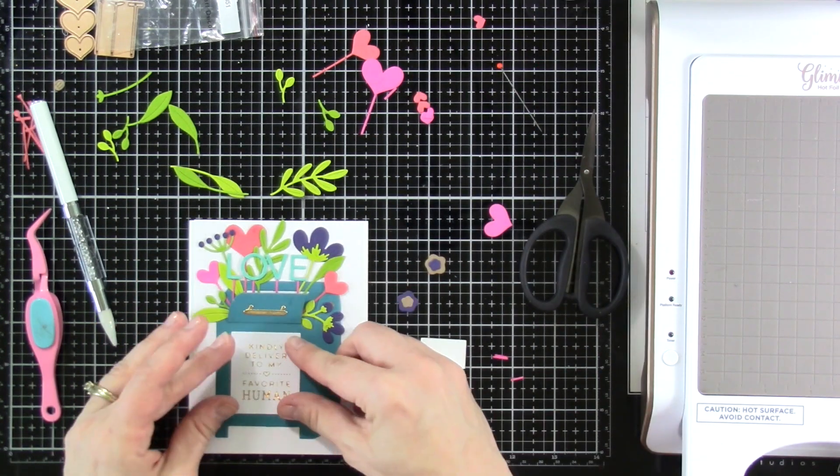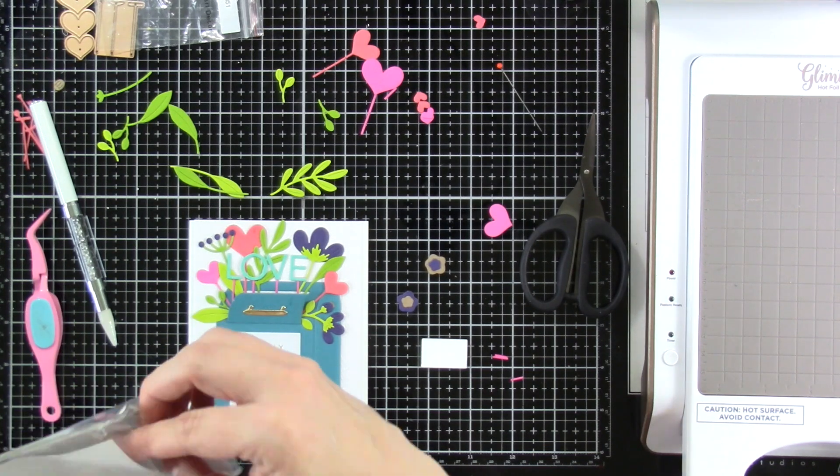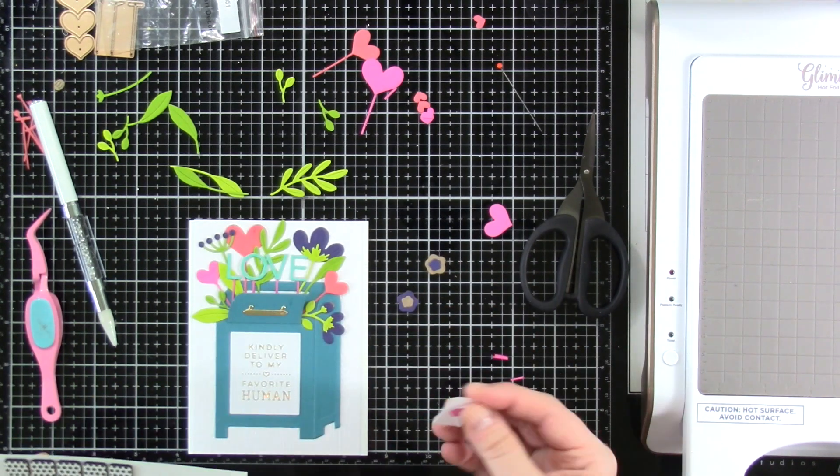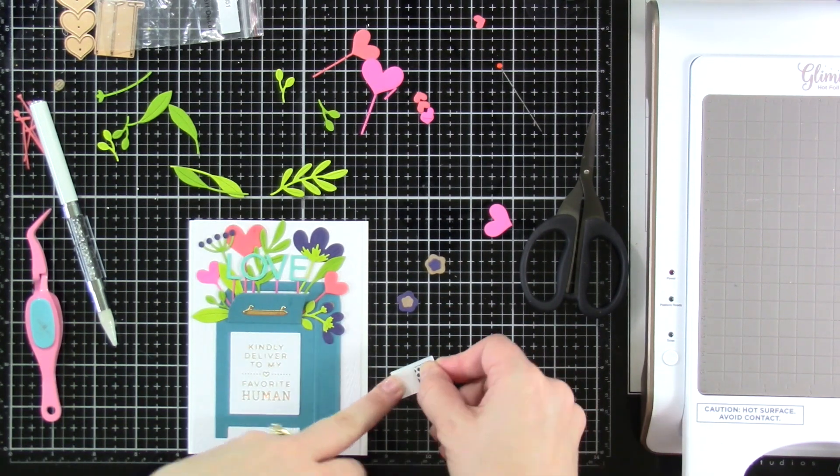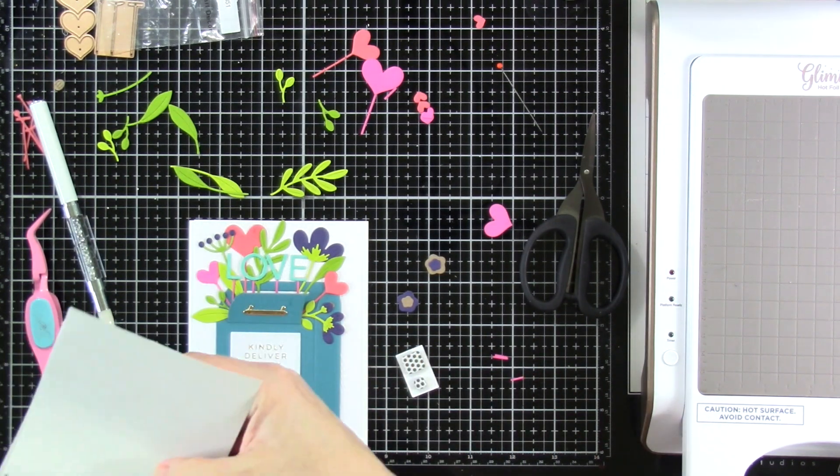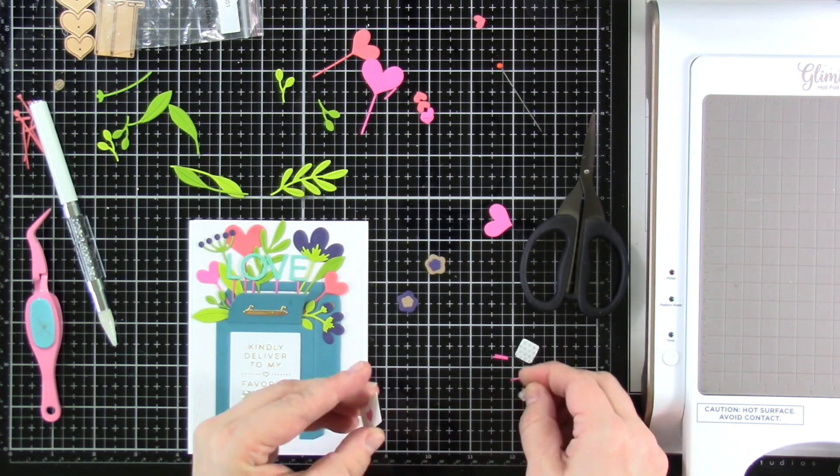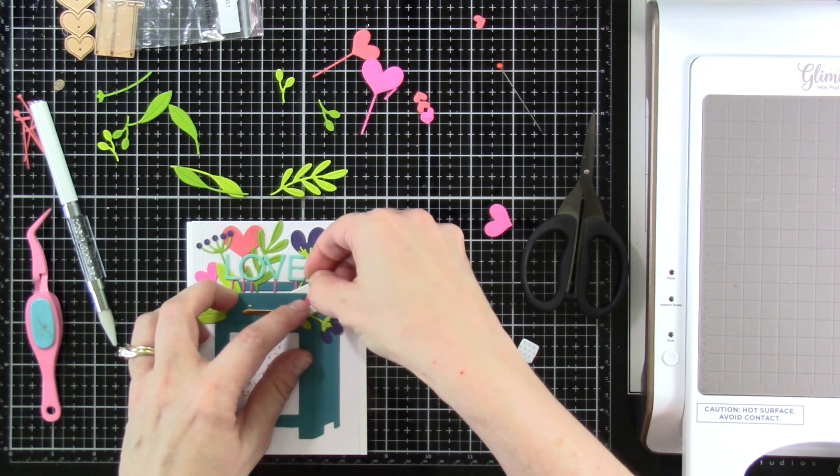And then here's where our foam squares are going to come in. I'll put a big one up top and a smaller one at the bottom. I just wanted those to stick out a little bit more than everything else. Putting that in there.